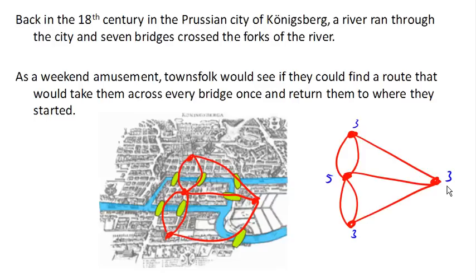It turns out that no, there is not an Euler circuit for this bridges scenario — for the bridges of Königsberg. And in fact, there's not even an Euler path, because all of our vertices have odd degree. It's more than just a pair. So there's no way to even start in one location, cross every bridge once, and end up in a different place.